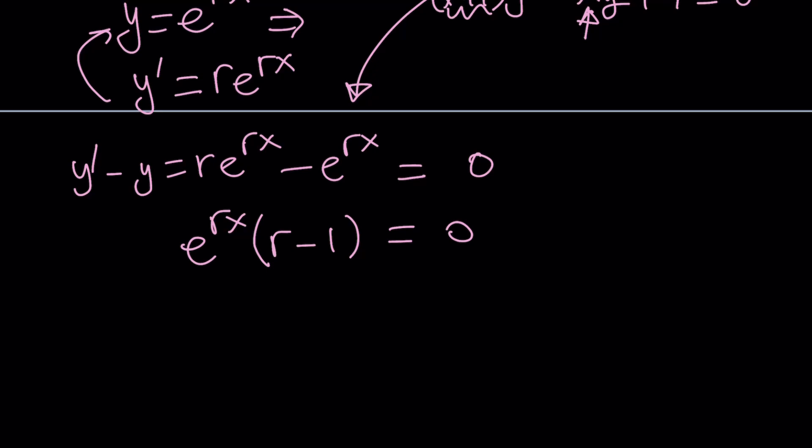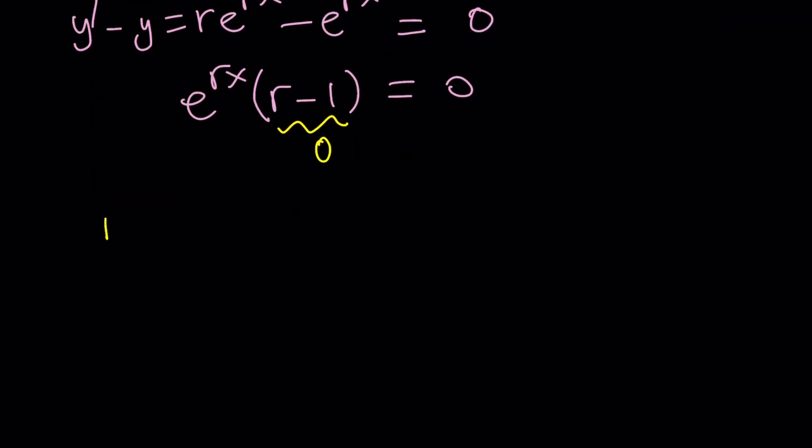This is what I mean by the characteristic equation because e to the rx can never be 0 even if x is complex. So, set r minus 1 equal to 0. From here, we get one solution, r equals 1.